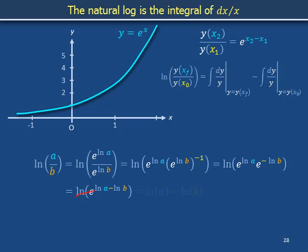But the natural log outside undoes the e, so what started out as natural log a over b turns out to be natural log a minus natural log b.